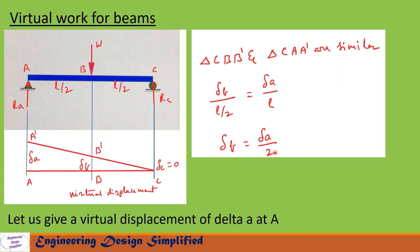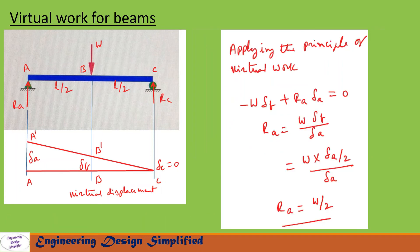From this we can write delta_B = delta_A / 2. Now let us write the virtual work equation: -W × delta_B, since W is acting vertically downwards and delta_B is in the upward direction, plus RA × delta_A, since RA is acting vertically upwards and delta_A is also upward.